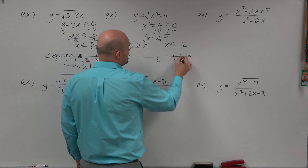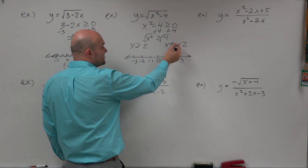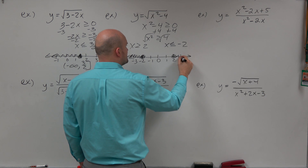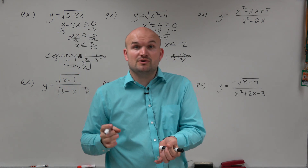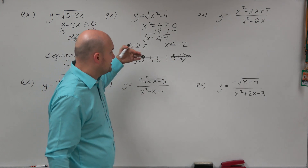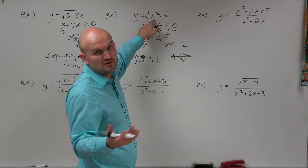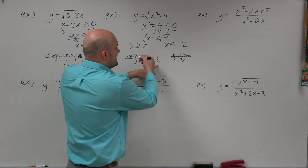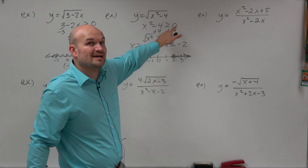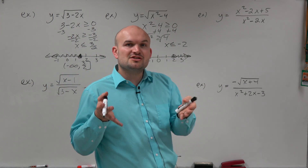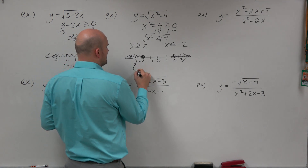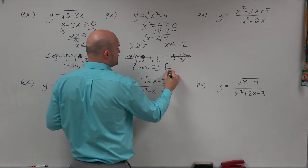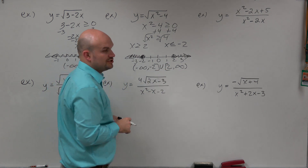Looking at the number line: 0, 1, 2, 3, negative 1, negative 2, negative 3. So x has to be less than or equal to negative 2, meaning all values less than negative 2, and x has to be greater than or equal to 2, going that way. For example, plugging in 3: 3 squared is 9, 9 minus 4 is 5, square root of 5 — good. Plugging in 0: 0 minus 4 is negative 4, and you can't take the square root of negative 4 in the real number system, so 0 is not in the domain. So the domain is negative infinity to negative 2, with negative 2 included, union 2, with 2 included, to infinity. We connect those with a union symbol.